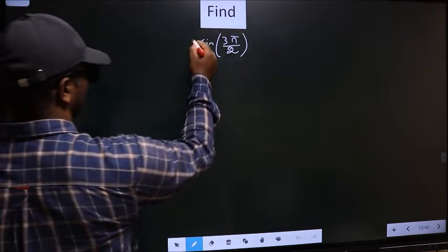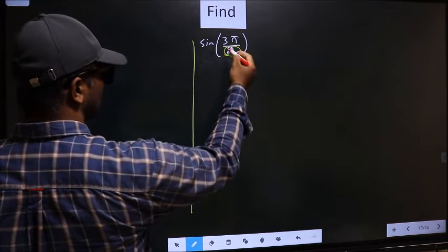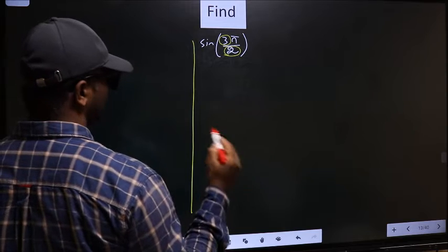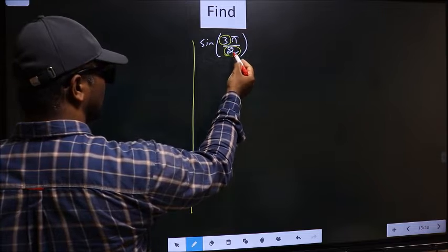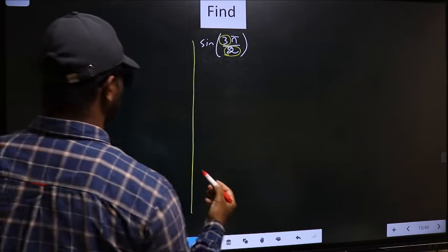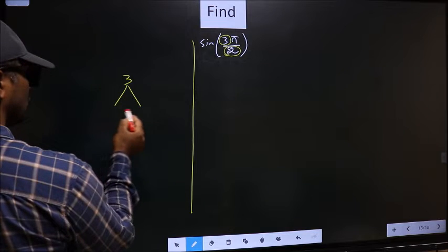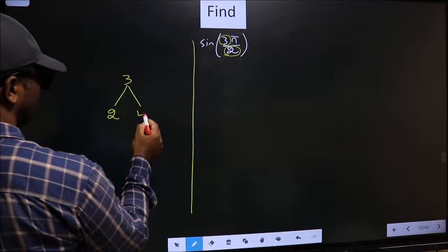See, in the denominator we have 2 and in the numerator we have 3. Now you should check 3 is close to which multiple of 2. What I mean is 3, and here you should write multiples of 2.